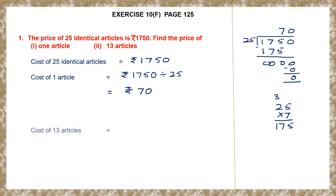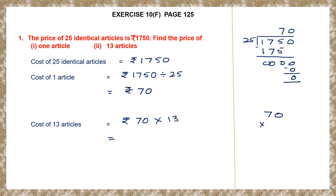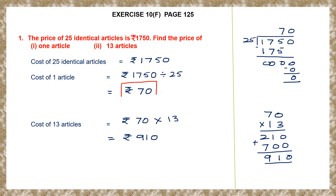The cost of one article we have found to be Rs. 70. Now, we have to find the cost of 13 articles. The first part was division — whenever you have to find for one, it's division. Now, we have to find for many, that is for 13. The cost of 13 articles will be the cost of 1, which is 70, multiplied by 13. So, 70 into 13: 3 zeros are 0; 3 sevens are 21; 1 zero is 0; 1 seven is 7. Adding up: 910. So, the cost of 13 articles is Rs. 910. We found the cost of one article to be Rs. 70 and the cost of 13 articles to be Rs. 910.